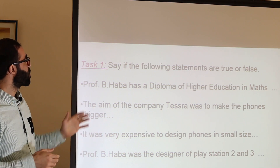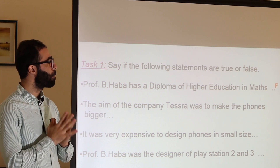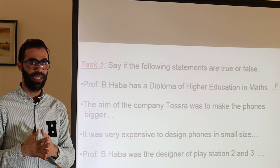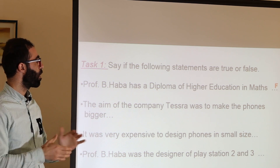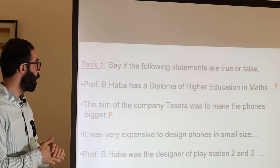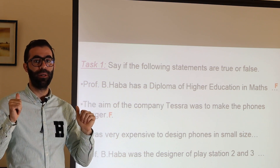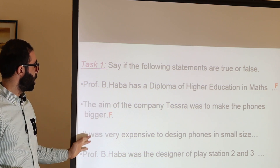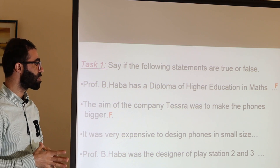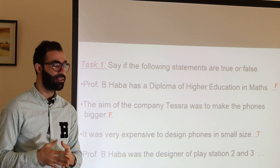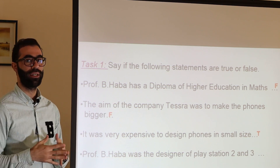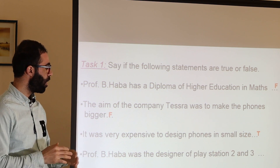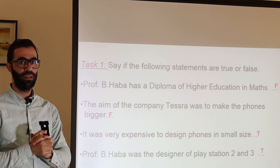Let's correct. The first one — Professor Balqasim Haba has a diploma of higher education in maths — that's false. We said he has it in physics. Number two — the aim of the company Tesla was to make the phones bigger — that's false. The aim was to make them smaller, not bigger. Number three — it was very expensive to design phones in small size — the answer is true; it needed too much money to make them smaller. And the last one — Professor Balqasim Haba was the designer of PlayStation 2 and 3 — that's true.